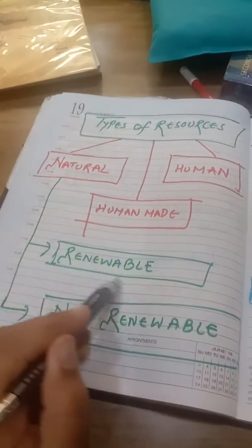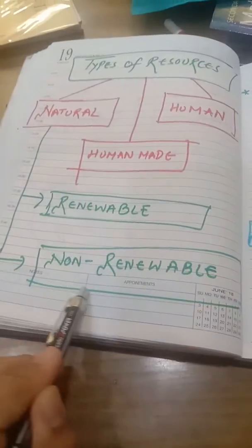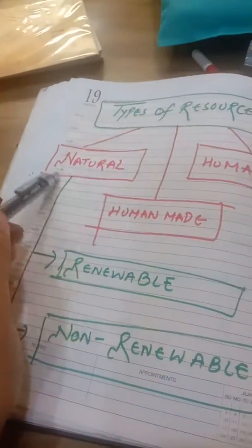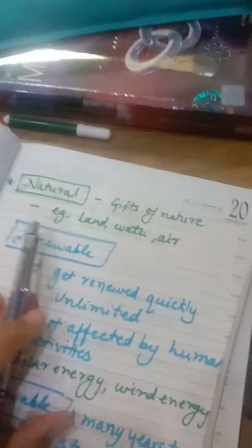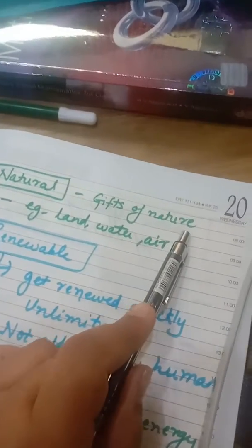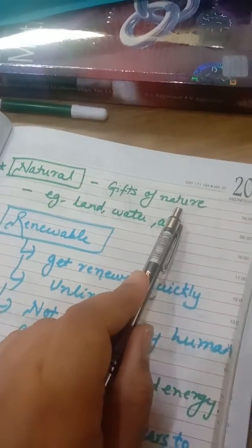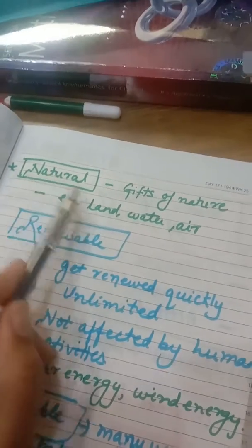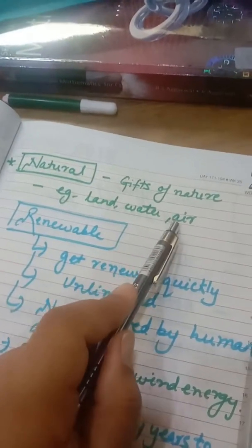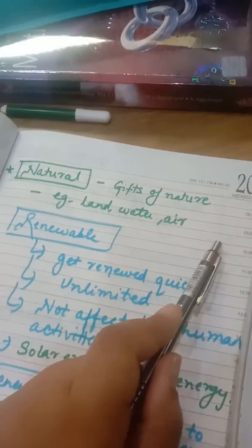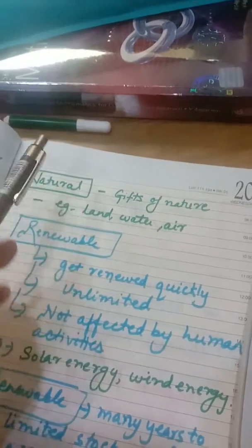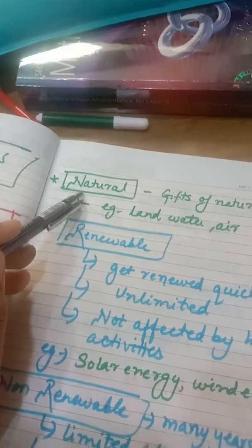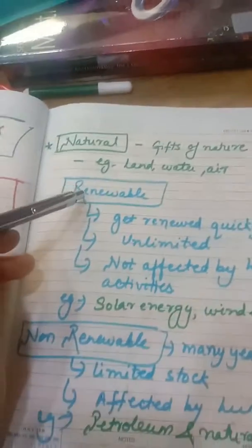Natural resources are again divided into renewable resources and non-renewable resources. All the gifts of nature which are given to us, or all the things related to nature, are natural resources. Examples: land, water, air, plants, animals — everything comes under natural resources. Natural resources are again classified into two types: renewable and non-renewable.